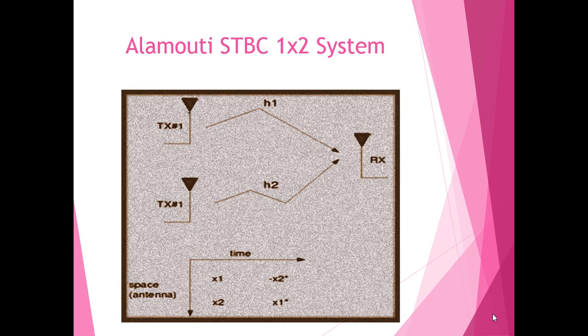Now we come to Alamouti space-time block coding for 1x2 system. It was first proposed by Siavash Alamouti in the 1x2 system. We have two transmitting antennas sending symbols to a single receiving antenna.